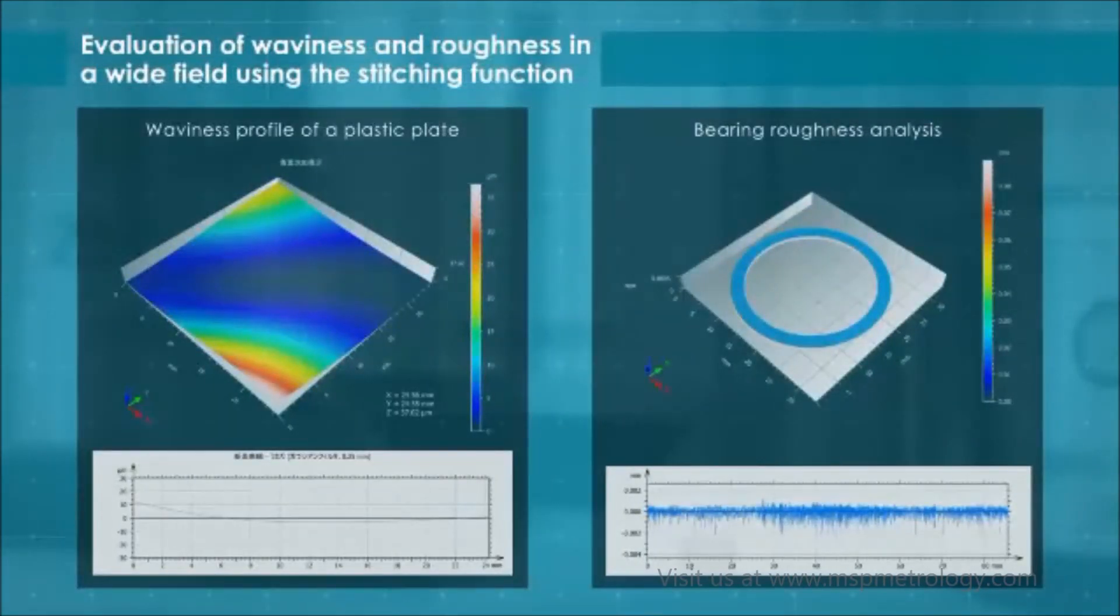This is the evaluation of waviness and roughness in a wide range. The stitching function enables you to conduct evaluation beyond the measurement range of the interference lens.